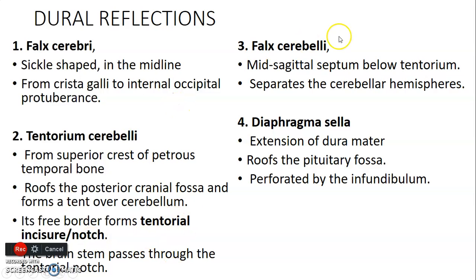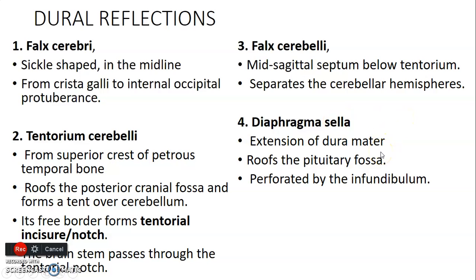The falx cerebri is above the tentorium, while the falx cerebelli is below the tentorium and separates the two cerebellar hemispheres. The fourth dural reflection is the diaphragma sellae, which is a continuation of dura mater that forms the roof of the pituitary fossa or hypophysial fossa. It is perforated by the infundibulum, which connects the hypothalamus to the pituitary gland.